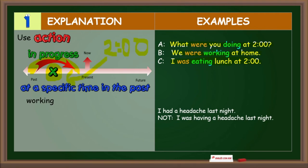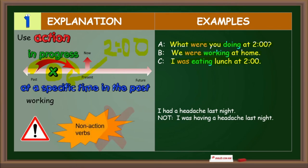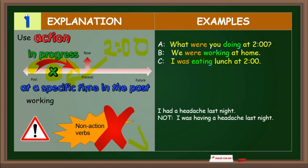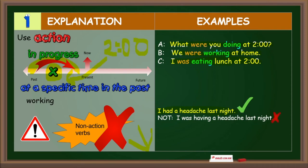Be careful. Non-action verbs are not usually used in progressive. For a list of common non-action verbs, you can go to the description section — I posted a link for you. For example, I had a headache last night. I cannot say 'I was having a headache last night' because 'having' is a non-action verb; it means possession.